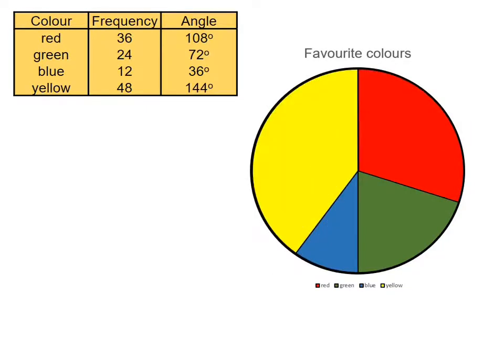And there we have our pie chart to represent the colours red, green, blue and yellow, and the number of people that chose them. Okay, this has been a video to show you how to draw a pie chart with a compass, a protractor and a ruler. I hope you've understood, and I thank you very much for watching.